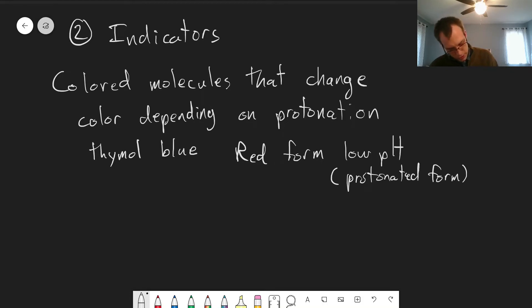But when it is deprotonated, it becomes yellow. And at higher pH, it turns blue. That's why the blue is in the name. But at the low pH, we have red and yellow form.